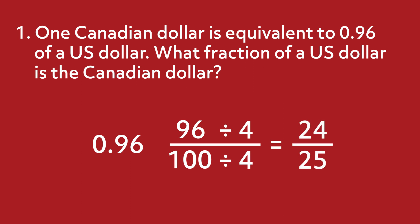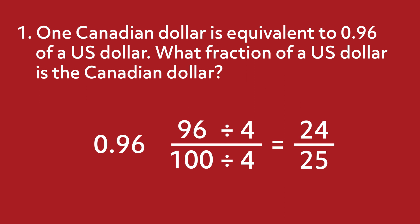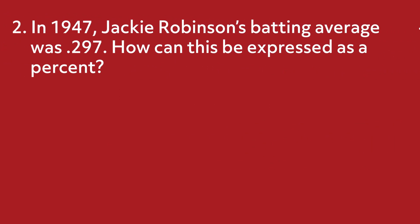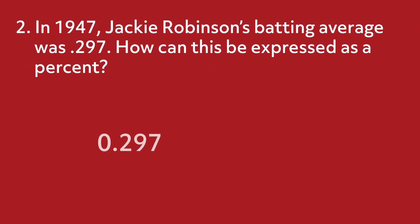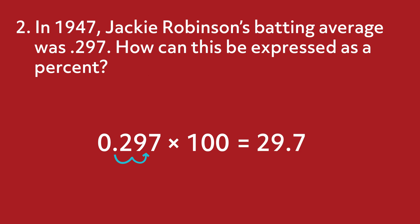Therefore, 1 Canadian dollar is equal to 24/25 of a US dollar. In 1947, Jackie Robinson's batting average was 0.297. How can this be expressed as a percent? First, multiply 0.297 by 100. Since multiplying by 100 moves the decimal point 2 spaces to the right, 0.297 times 100 equals 29.7. Jackie Robinson's batting average can be expressed as 29.7%. As a batter, Jackie Robinson was successful almost 30% of the time.